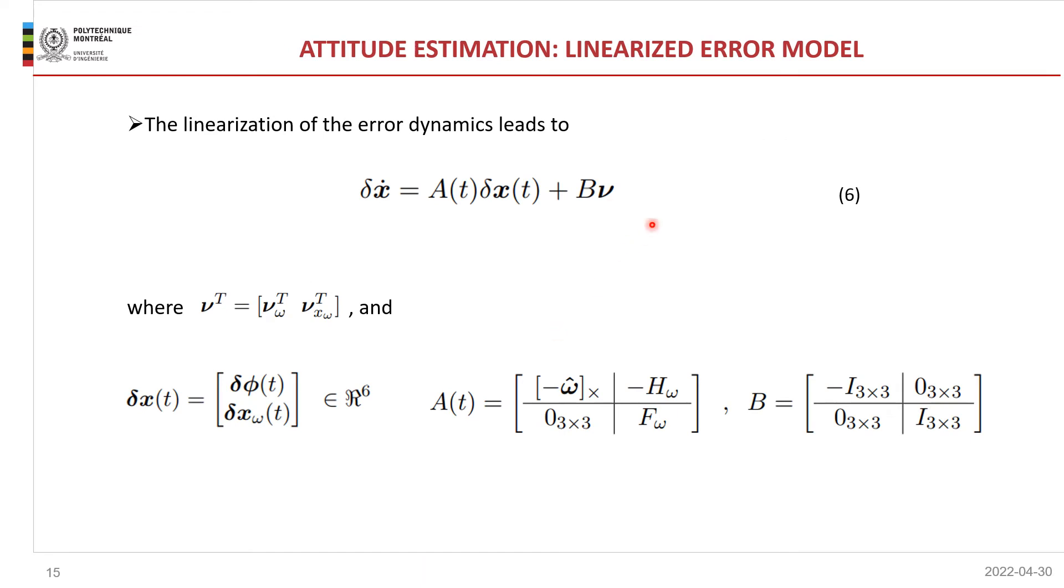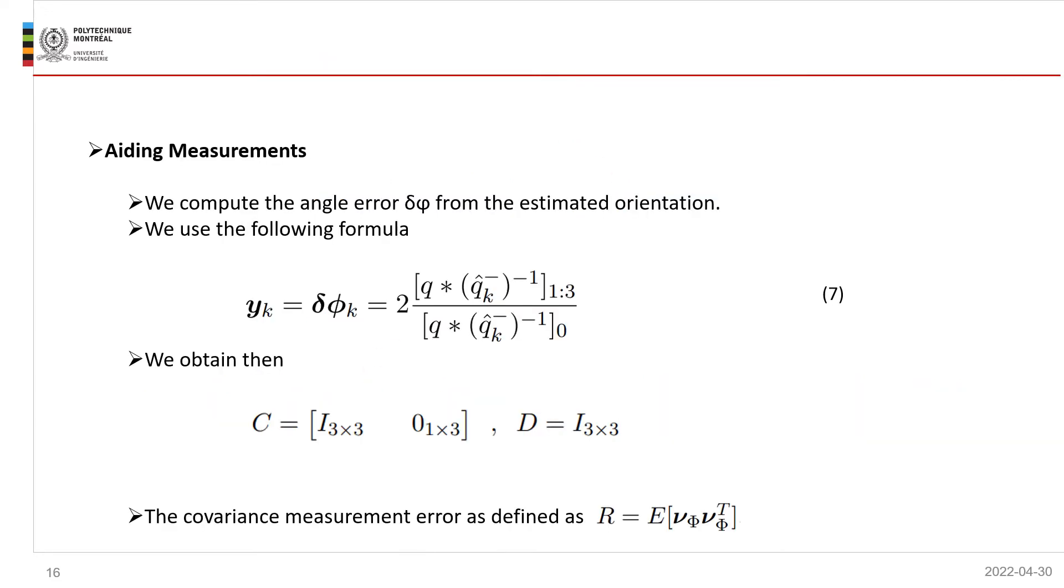Before describing our algorithm, we have to linearize our system, our error model. So after linearizing the dynamics, we obtain the following equation six. So our state vector is an error state vector, which is composed by the minimized quaternion error and the gyro state error. The state vector contains six components.